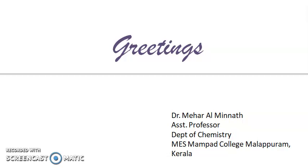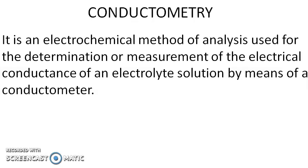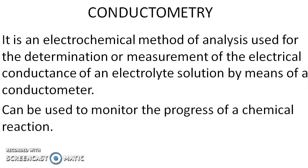Welcome to this session. In the last session we discussed about electrolytic conductors, electrolytic conductance, and variation of electrolytic conductance with concentration. Today we shall discuss conductometry, which is the method of determination of electrical conductance by means of a conductometer — that is, you analyze or determine the electrical conductance of an electrolyte by means of a conductometer, and this can be used to monitor the progress of a chemical reaction.